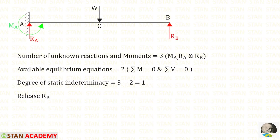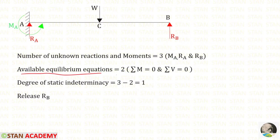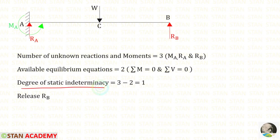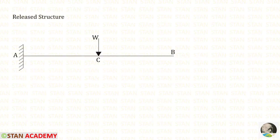First we are going to find the prop reaction Rb using the consistent deformation method. We must find the degree of static indeterminacy. The number of unknown reactions and moments are 3: moment Ma, and vertical reactions Ra and Rb. The available equilibrium equations are 2: sigma M = 0 and sigma V = 0. The degree of static indeterminacy is 3 minus 2, which equals 1. So we release Rb, converting this statically indeterminate beam into a statically determinate cantilever beam.